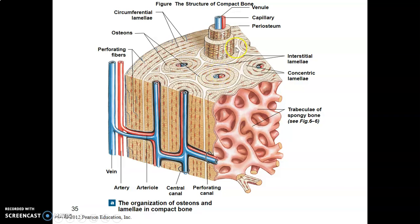The Haversian system, or osteon, forms the histological organization of compact bone. Centrally, you have a Haversian canal containing neurovascular structures. Surrounding it are concentric lamellations of collagen type 3. Within the lamellations are lacunae housing osteocytes, which send out thread-like cytoplasmic extensions housed in canaliculi, enabling communication between adjacent osteocytes.